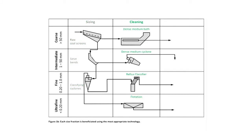The large and small fractions can be beneficiated using dense-medium processes. The fine size is treated in various ways, including spirals and reflux classifiers. The ultra-fine fraction, if there is sufficient valuable material to justify processing, is usually treated using flotation.